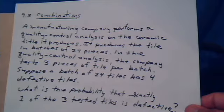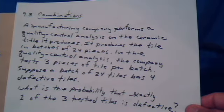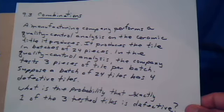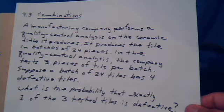In the quality control analysis, the company tests three pieces of the tile per batch. So from that box of 24, they're going to pull three pieces at random.